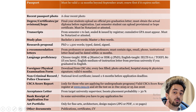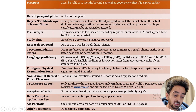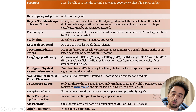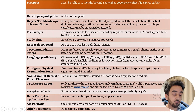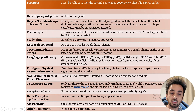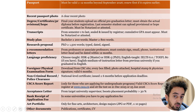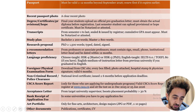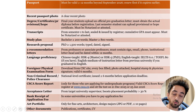For language proficiency: if you're applying for Chinese-taught programs at bachelor's, master's, or PhD level, HSK 4 or HSK 5 is required — it's compulsory. If you're applying for English-taught programs, having IELTS or TOEFL is really good for your application. But if you don't have these, you can get an English proficiency letter from your last university — that works for this scholarship.